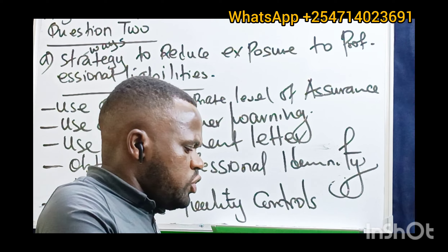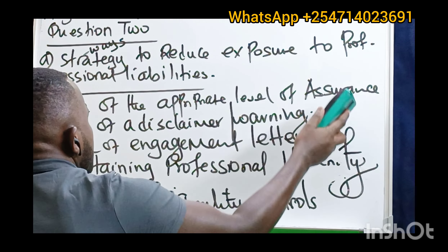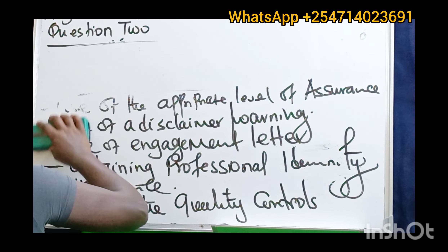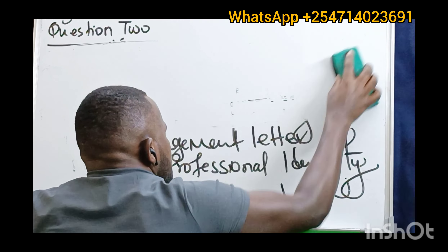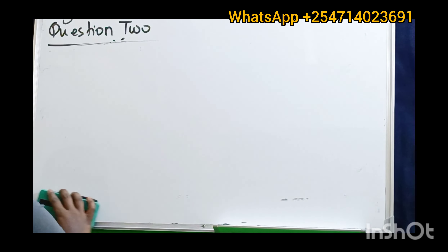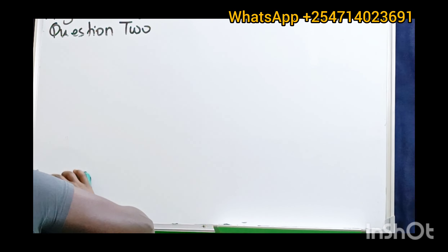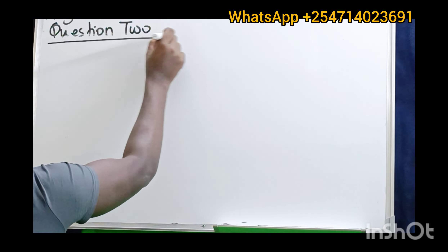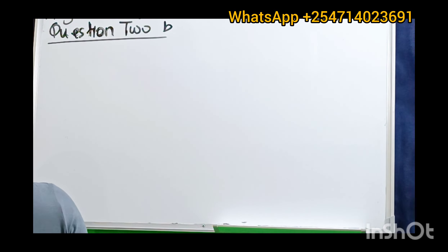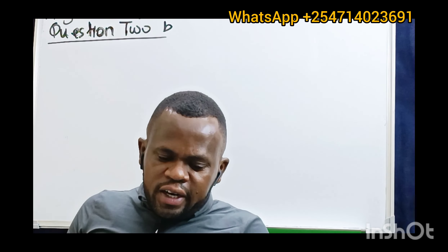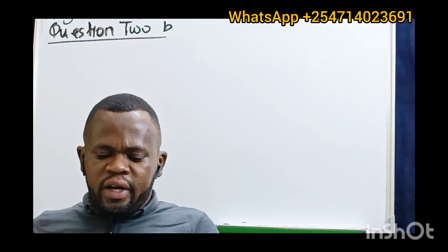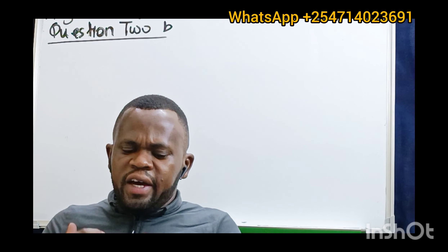Allow me to go to part B of the question — question 2B. The question says: auditors are frequently required to provide assurance for a broad range of non-audit engagements. Roman numeral one of question 2B asks: summarize four elements of an assurance engagement.